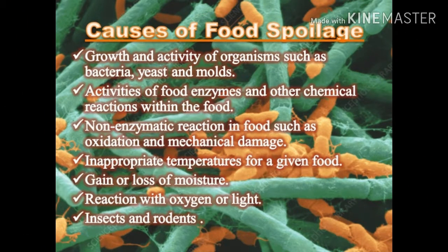Food spoilage results when microbiological, chemical, or physical changes occur rendering the food product unacceptable to the consumer. Microbiological food spoilage is caused by the growth of microorganisms which produce enzymes that lead to objectionable by-products in the food. Chemical food spoilage occurs when different components in the food react with each other or with some added components which alters the food's sensory characteristics.